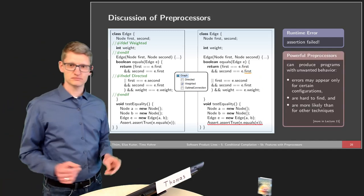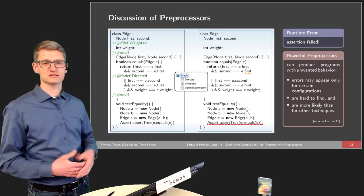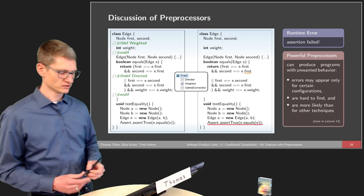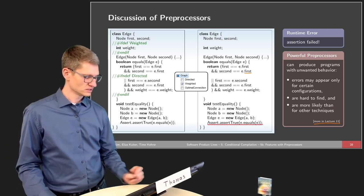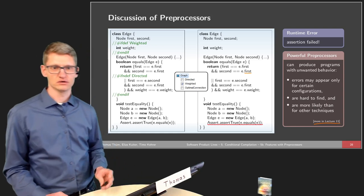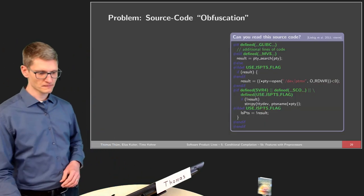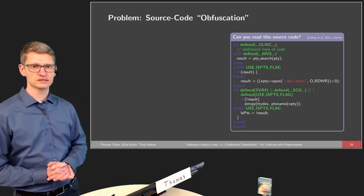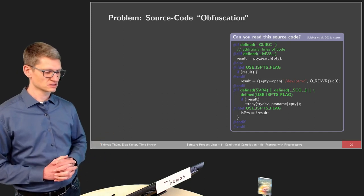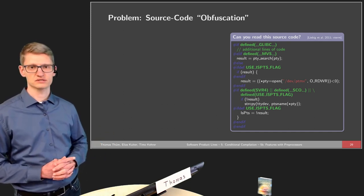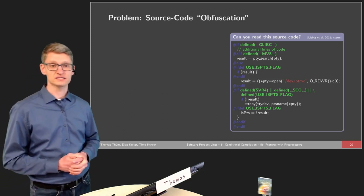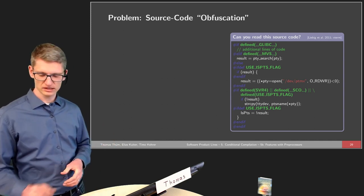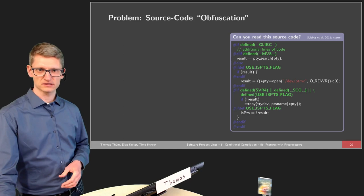There are also problems that occur at runtime. This is a very subtle error introduced on purpose: the wrong node is compared, causing a failing assertion. Preprocessors are very powerful but may produce unwanted behavior, and a later lecture will cover how to find problems that only occur at runtime. We have other problems besides those already mentioned.